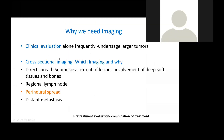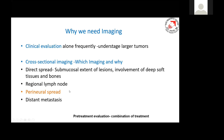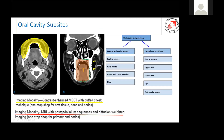Why do we need imaging? Clinical evaluation alone sometimes understages large tumours. What we want to see on imaging includes: direct extension such as submucosal extent of lesions, involvement of deeper compartments or bone, whether there are nodes — either clinically negative or clinically positive — the status of these nodes, their relationship with vascular structures, perineural spread that occurs in these compartments, and distant metastasis. Regarding which modality we will choose...